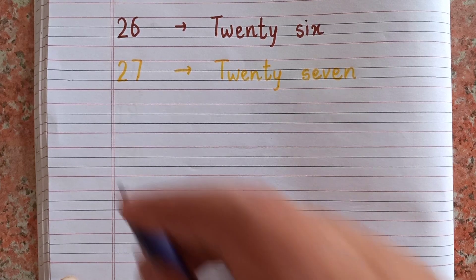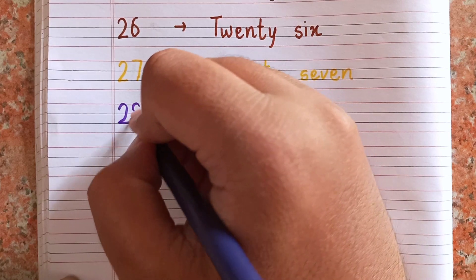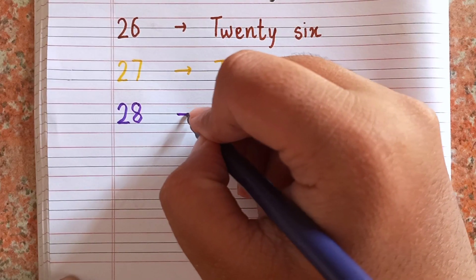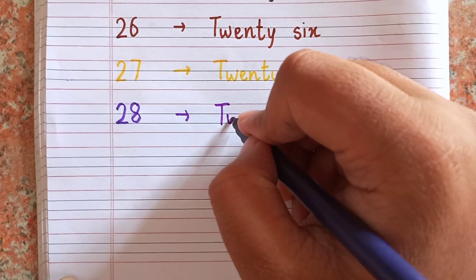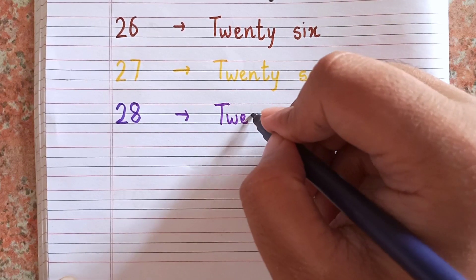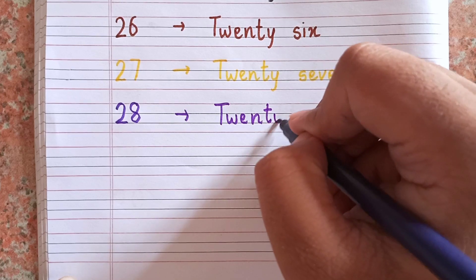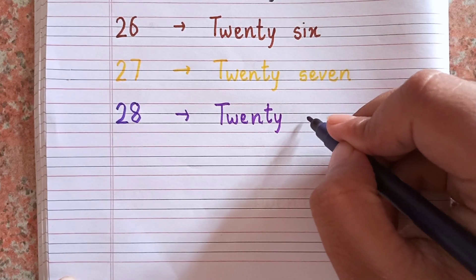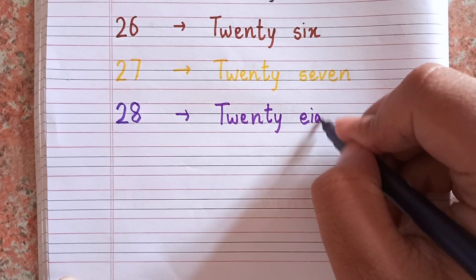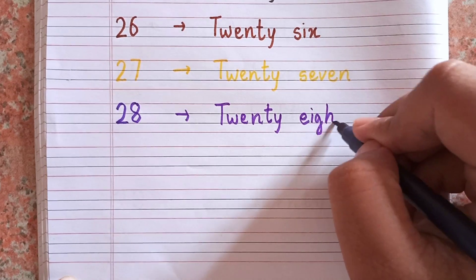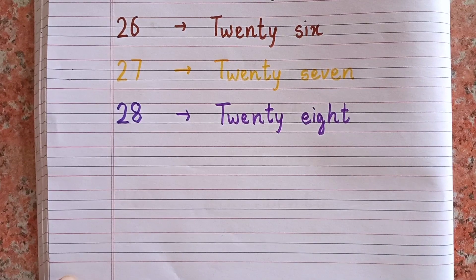After twenty-seven, the next number is twenty-eight — 2-8. The spelling of twenty-eight is T-W-E-N-T-Y E-I-G-H-T. 28.